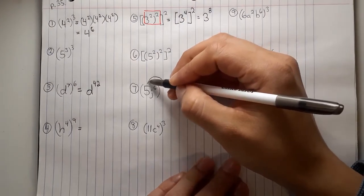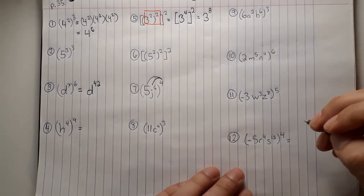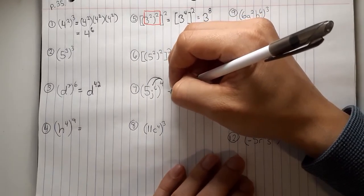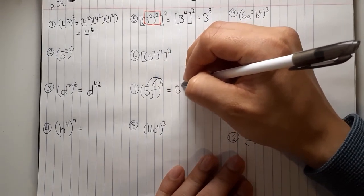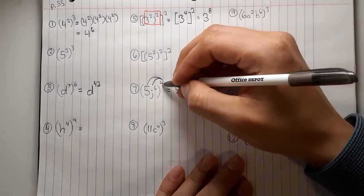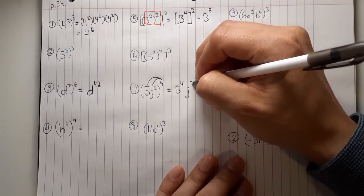So 4 gets distributed to the 5 and 4 gets distributed to the j. So that will be 5 to the power of 4. And 6 times 4 is 24, so that would be j to the power of 24.